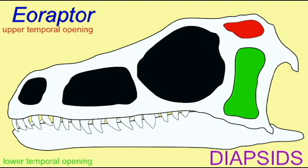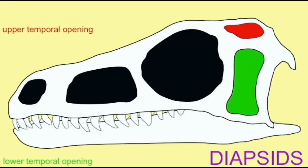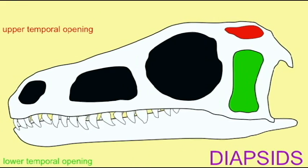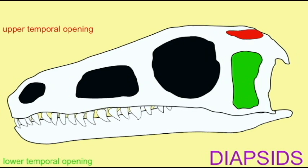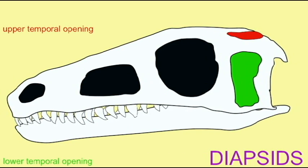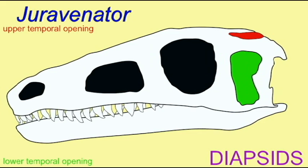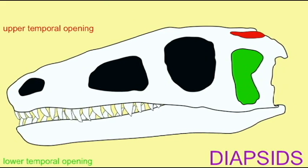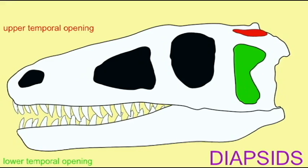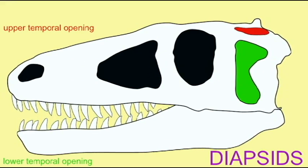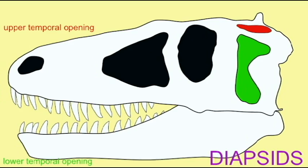In this animation, one can see the changes which occurred in the meat-eating dinosaurs, the theropods, from early forms such as Eoraptor through a much more advanced form at the end of the Mesozoic era, Tyrannosaurus rex. Notice that throughout, they modify the two temporal openings which they possess, the upper temporal opening and the lower temporal opening.